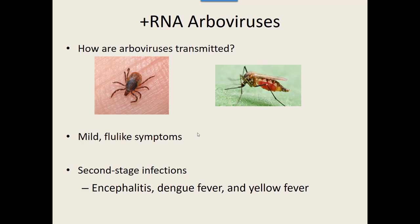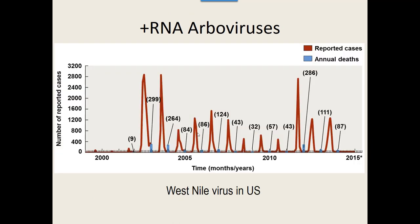The West Nile virus is one arbovirus in the Flaviviridae group that we do have around here. It was originally found in Africa in ticks on birds, and some migratory birds that came over from Africa brought ticks with them — and we now have this virus in the lower 48 states. It's spread generally by ticks, and it can also be spread by mosquitoes, which we have lots of around here in the summer.